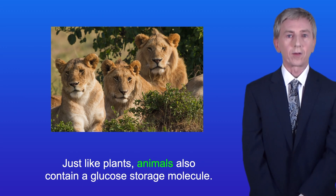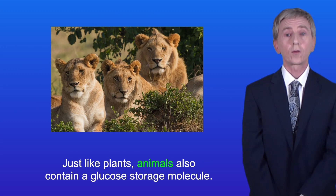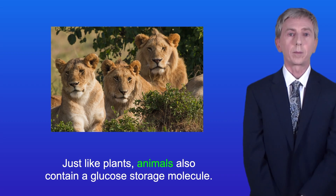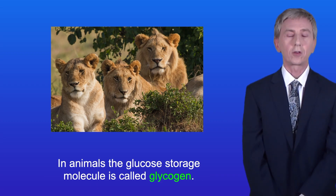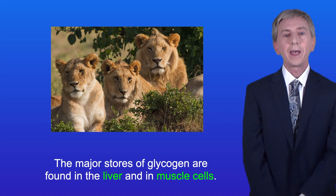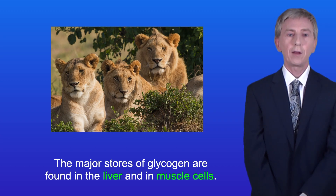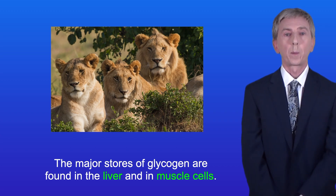Now just like plants, animals also contain a glucose storage molecule. In animals the glucose storage molecule is called glycogen, and the major stores of glycogen are found in the liver and in muscle cells.